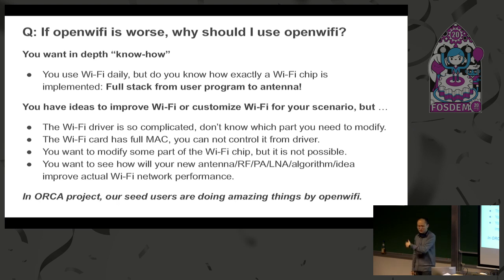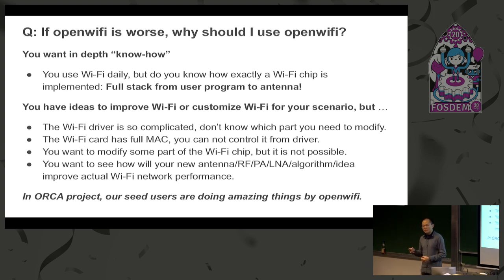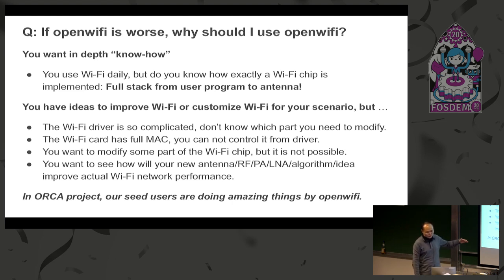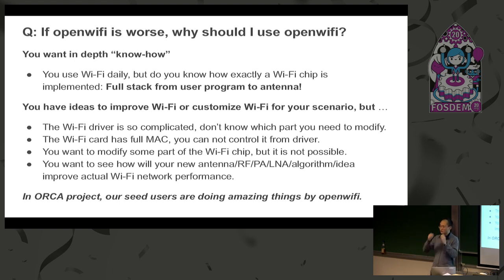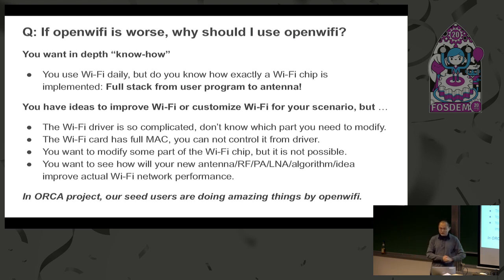If you buy a commercial Wi-Fi chip, that's a black-box silicon — you don't know what's inside. How can you teach students the know-how of how a Wi-Fi chip runs? With this design, you have the full stack open — from the user program in Linux all the way to the antenna. In the FPGA there's also logic to control the front-end and antenna: antenna selection, TX scan, RX, AGC. Everything works just like those modules in a commercial chip.